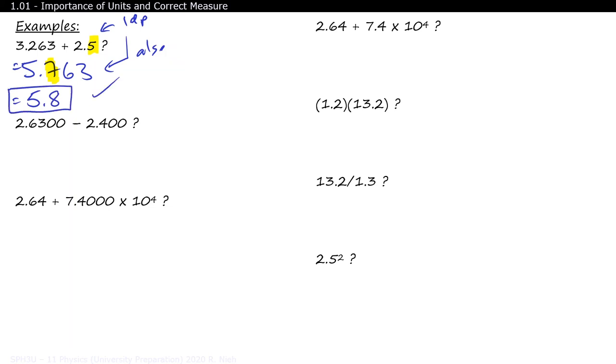When we subtract 2.6300 with 2.400, we initially get the answer of 0.23. However, 2.400 has a precision to the nearest thousandth, so our final answer should also be rounded to the nearest thousandth as well, of 0.230.